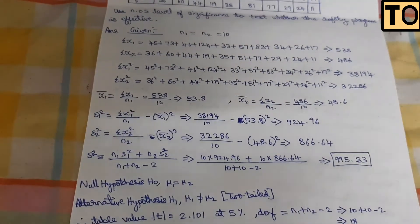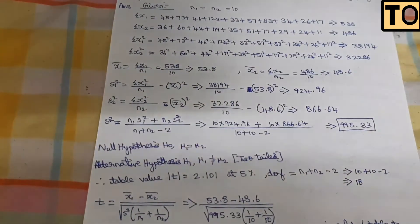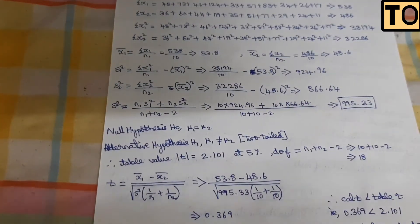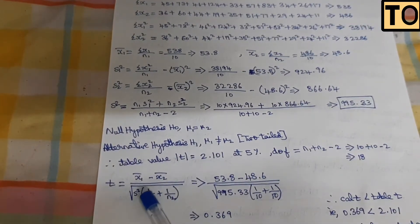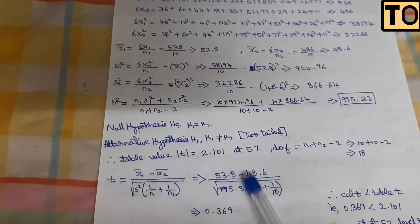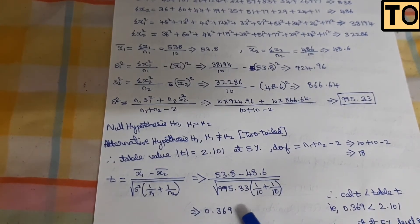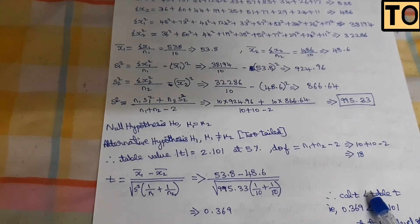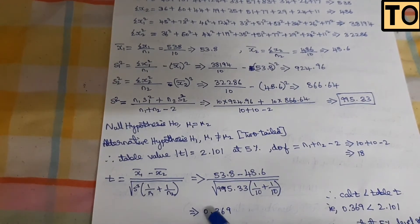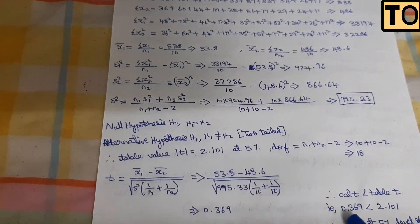Now let's look at the calculated value of t. The formula is x1-bar minus x2-bar divided by the square root of s-squared into 1 divided by n1 plus 1 divided by n2. The calculated value of t is 0.369. The calculated value of t, 0.369, is less than the table value of t, 2.101.